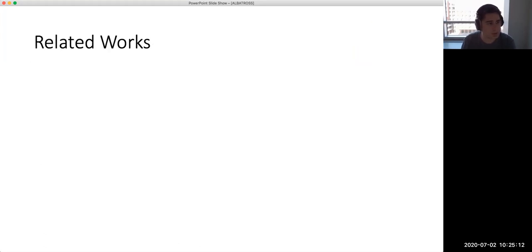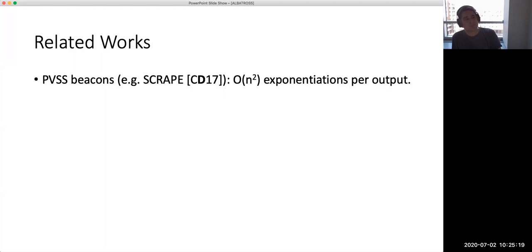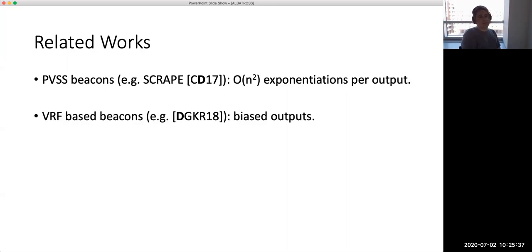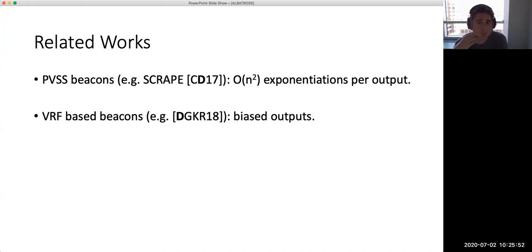Comparing this beacon construction with previous works: PVSS-based beacons such as SCRAPE require, in the best case, O(n²) exponentiations per random output, while we require at most O(log n) in the worst case. The VRF-based beacons that are extremely efficient — used in state-of-the-art proof-of-stake blockchain protocols such as Ouroboros Praos, Genesis, Algorand, Thunderella — have biased outputs, meaning an adversary can always introduce some bias. You will not get a uniformly random output as we get with our beacons. And they still give you one output, not a big matrix of random outputs.